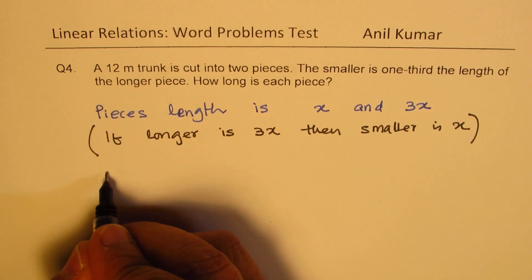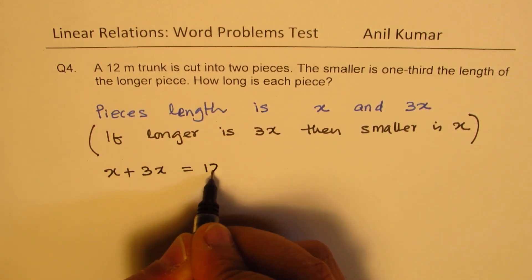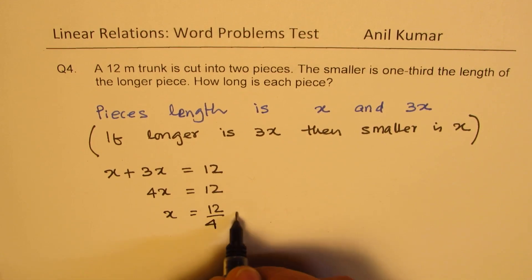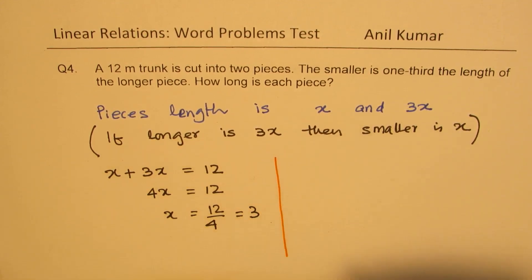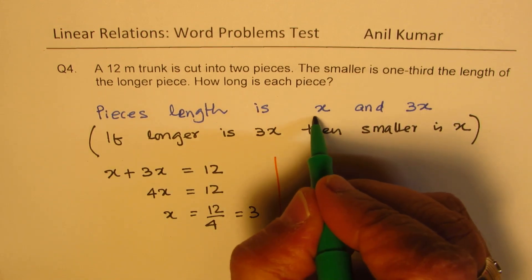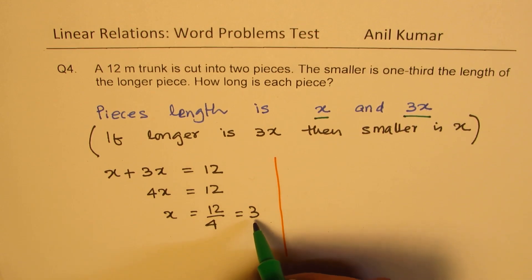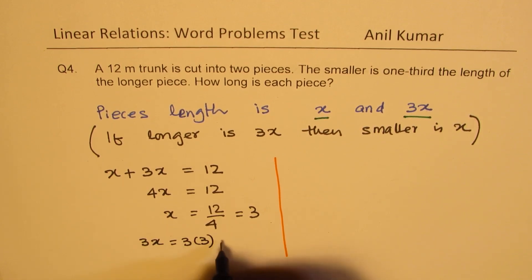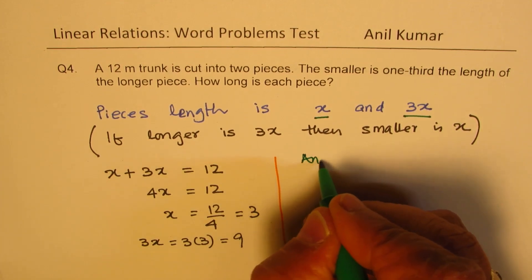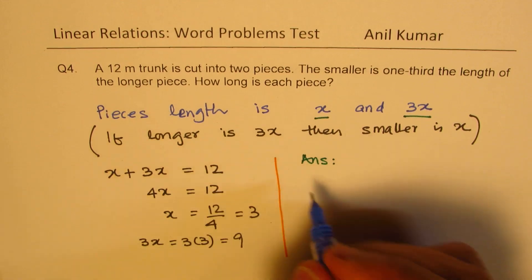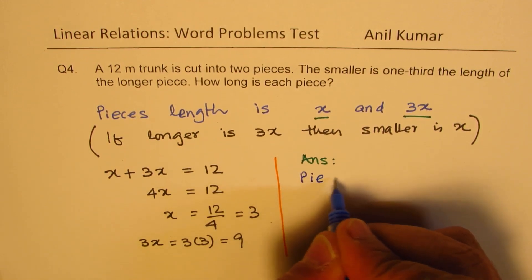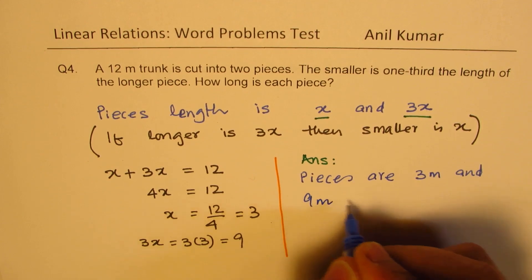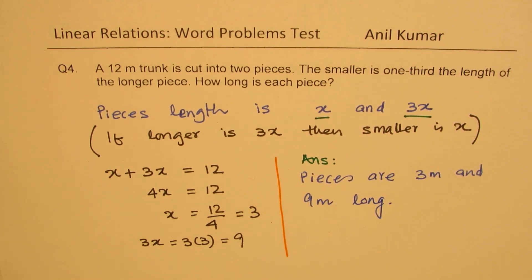Their total is 12, so x plus 3x equals 12, giving 4x equals 12, so x equals 3. One piece is 3 meters and the other is 3 times x, which is 9 meters. The pieces are 3 meters and 9 meters long.